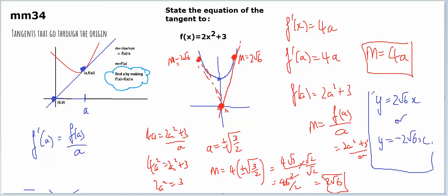And the equations will touch at the value of a, which is the square root of 3 on 2. And if I sub that into here, 2 times 3 on 2 plus 3, which is 3 plus 3, 6.